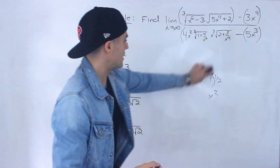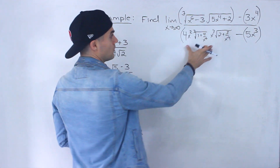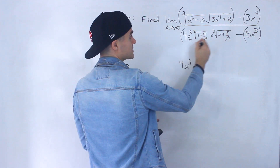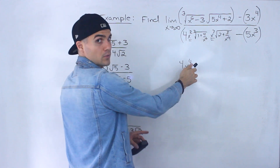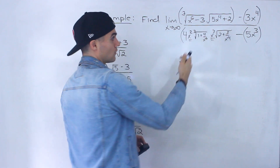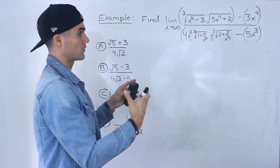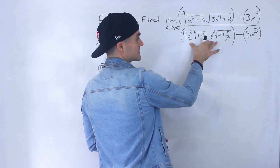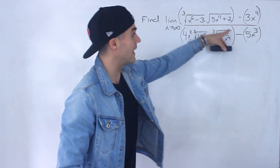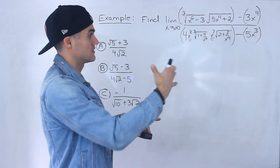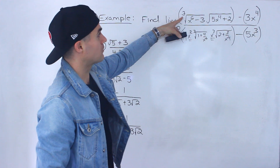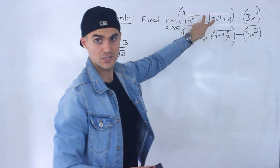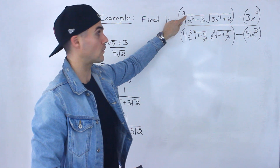Now stuff is looking better. This entire term is going to have a degree of x to the four. Notice this x squared times this x squared gives us x to the four, and then we just rewrite those roots. We're trying to figure out the degree of this term, and the fact that we've got these x squareds multiplying means it's going to be x to the four. So the degree of that original term in the limit is x to the four. The third root of x to the six is x squared, and the square root of x to the four is x squared again, so that term also has a degree of four.